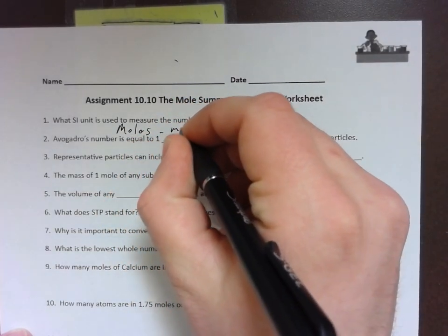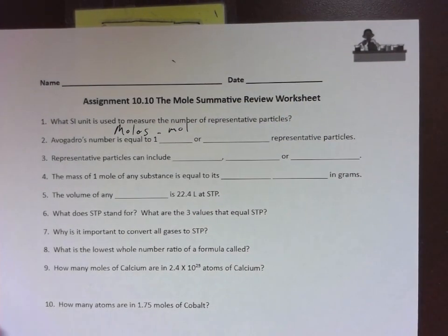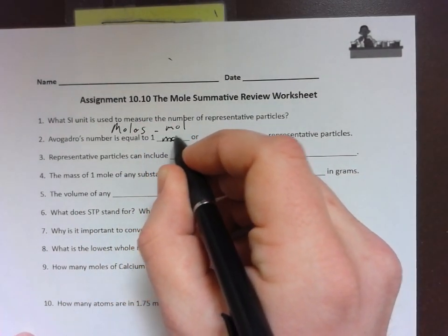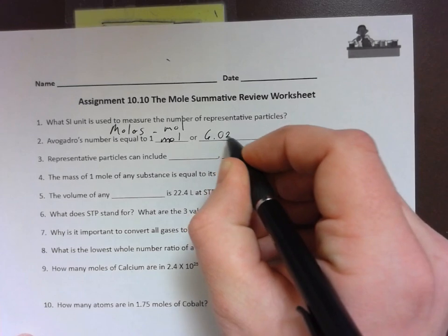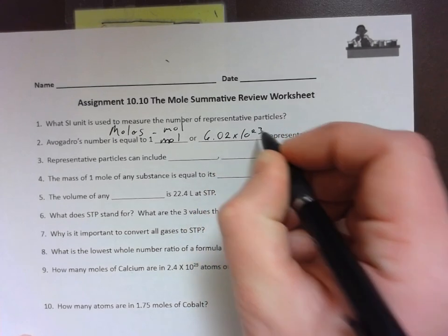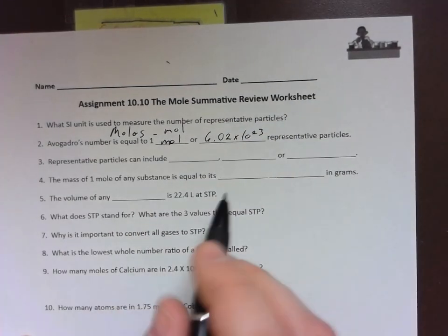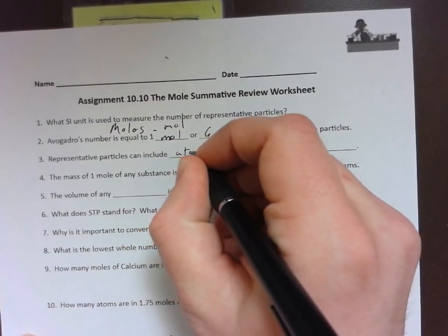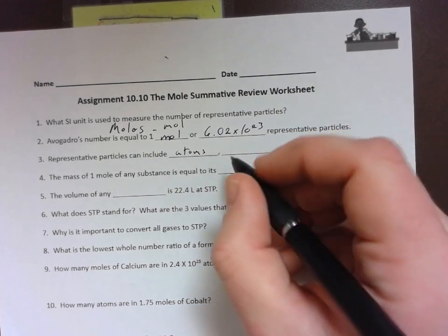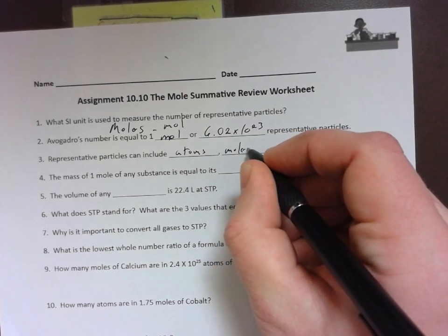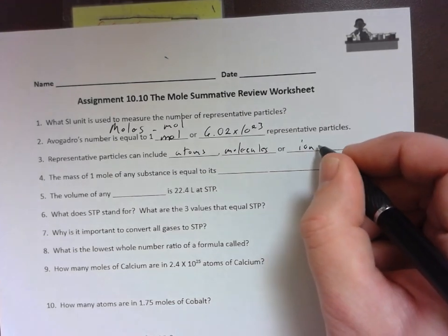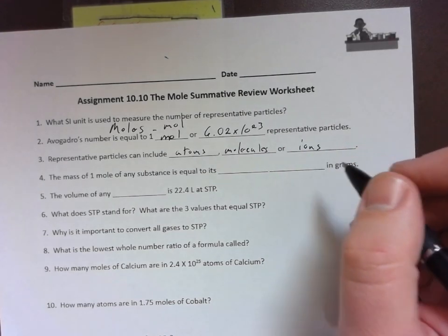Avogadro's number is equal to 1 mole or 6.02 times 10 to the 23rd. Representative particles can be atoms, which is the smallest form of an element, molecules which is the smallest form of a compound, or ions. You can also use particles if it asks for particles.